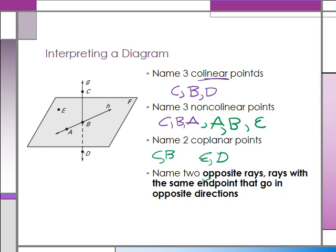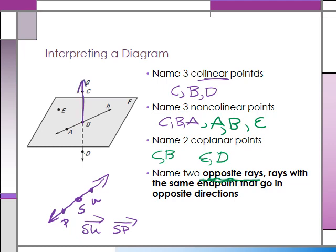One more definition: opposite rays are rays with the same endpoint but that go in opposite directions. For example, using points P, S, U — rays SU and SP would be opposite rays. In our diagram, the only opposite rays we have would be BC and BD: they share endpoint B but go in opposite directions.